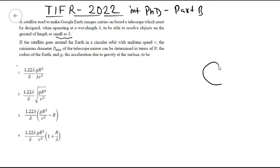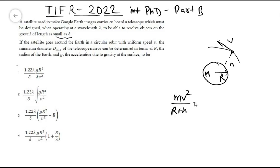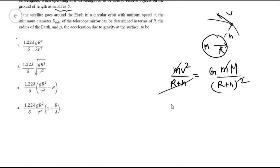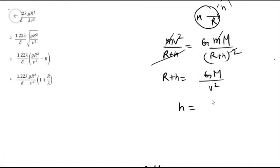From this data we can calculate the height of the satellite from the surface of the earth. The earth has mass M and radius R, and the satellite revolves with velocity V at height h. The centripetal force mv²/(R+h) is provided by the gravitational force GMm/(R+h)². After cancellation, we get h = GM/v² − R.